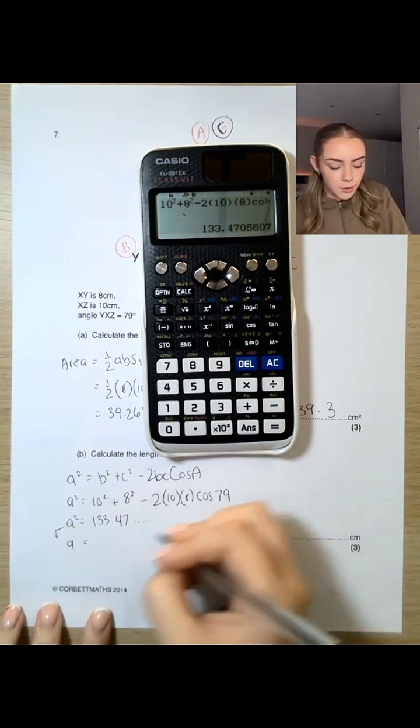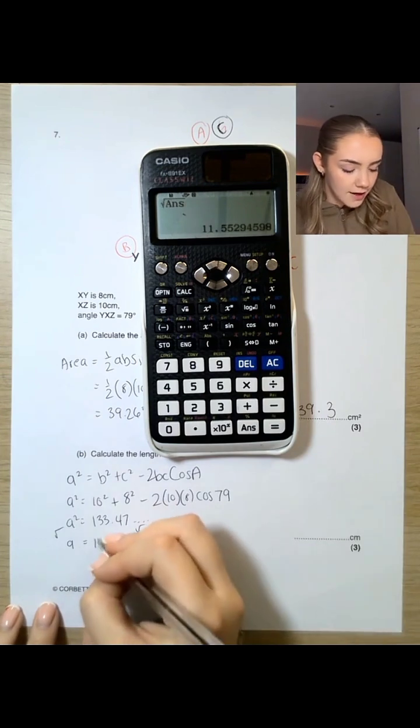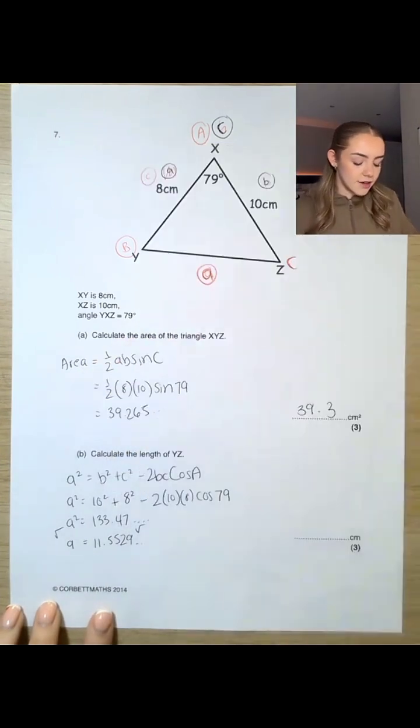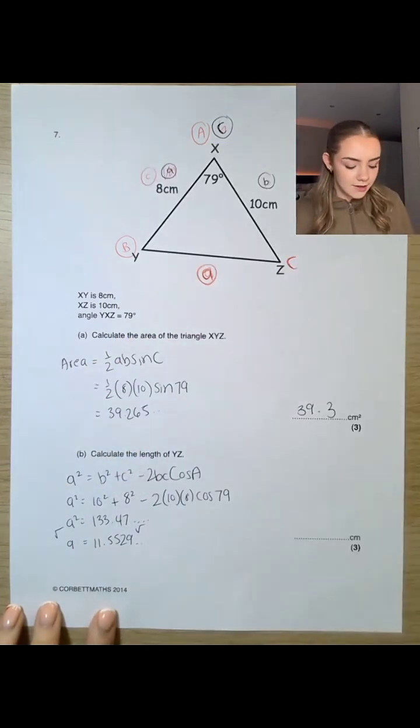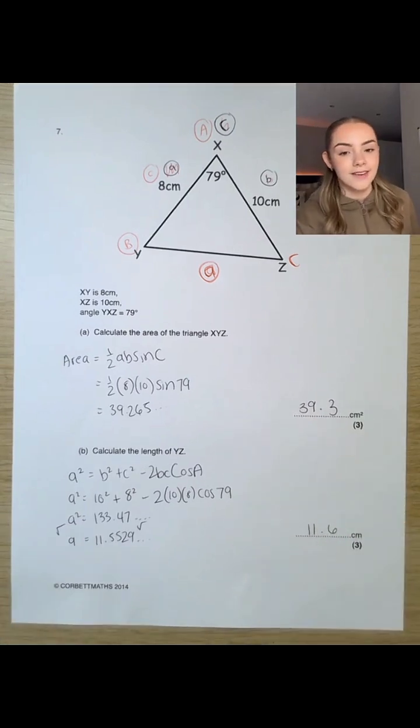To get from a squared to a, we want to square root both sides. So if we square root that answer that we have here, we'll get 11.5529, and so on. Again, it doesn't ask us to round, so I'll just do one decimal place, and that will be 11.6 centimeters as our final answer.